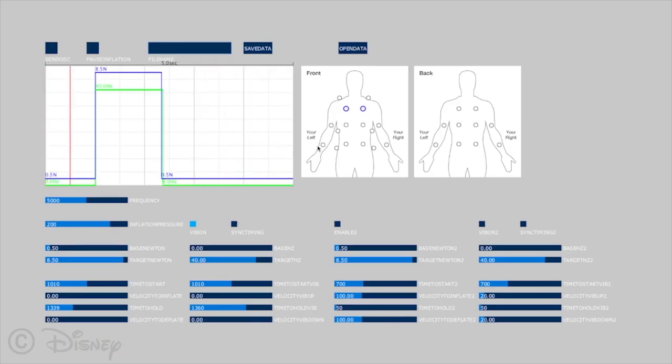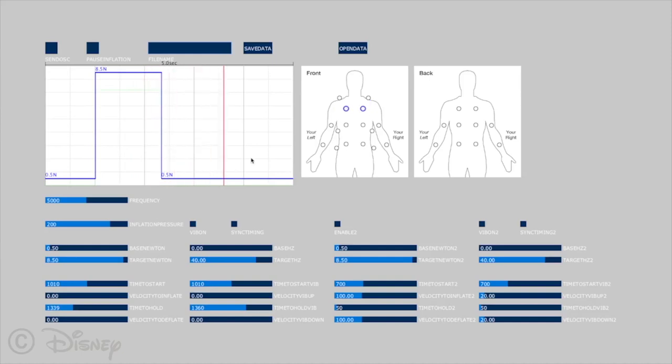Jacket inflation parameters such as inflation speed, force, and duration are specified using the haptic effects editor. The motion interface is used to sequentially inflate compartments to simulate motion across the body.